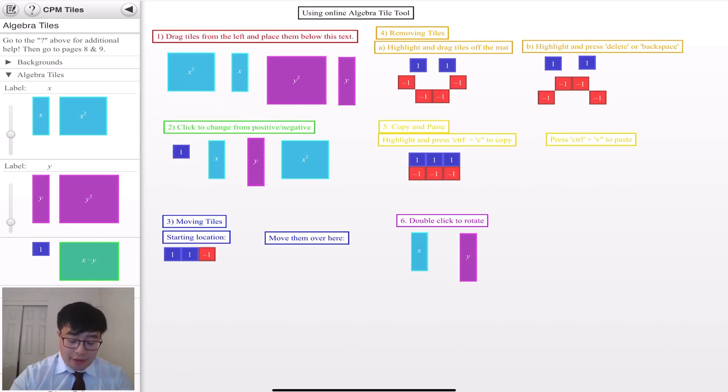The next thing you guys can do is click on the tiles to change it from positive to negative. So if you see, if I just single click it, these tiles are going to change from positive to negative. And if I want to change it back, I just have to click it again.